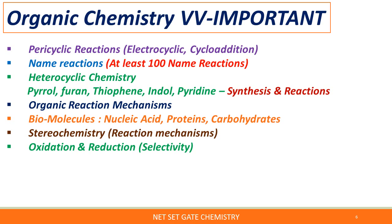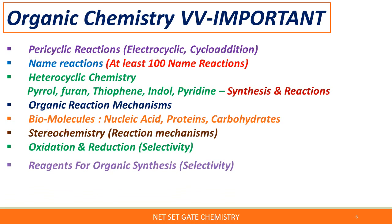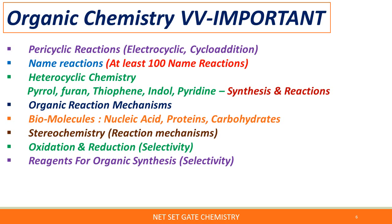So many organic reaction mechanisms are there — you have to practice mechanisms and particular transformations, including oxidation and reduction reagents used in chemical reactions, and how the reaction mechanisms proceed. Then for biomolecules — nucleic acids, proteins, and carbohydrates — particularly carbohydrate chemistry will be asked in GATE chemistry. Also focus on stereochemistry of reaction mechanisms and selectivity of oxidative and reductive processes.